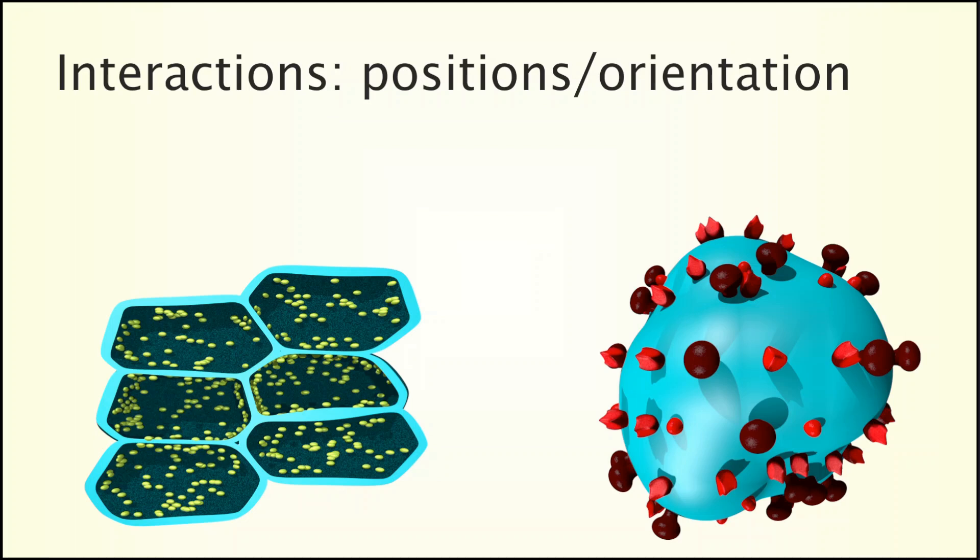Here I am presenting two examples where interactions affect position and orientation of elements. Chloroplasts of plant cells to the left are aligned along plant cell walls and envelope proteins of this influenza virus to the right are located within this envelope of course and are orientated perpendicular to the viral surface.